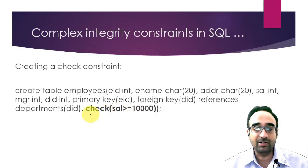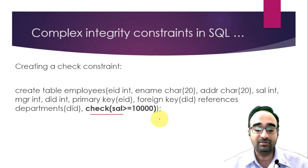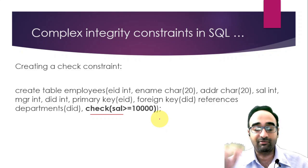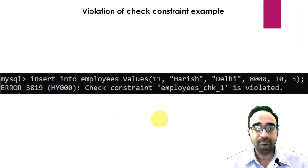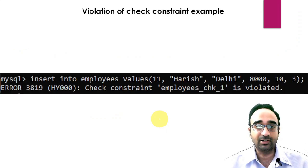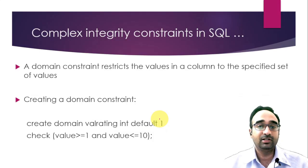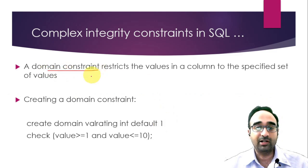Whatever conditions you want to check, you can define them in the table definition. You can also add a check constraint after creating the table by using the ALTER command. That covers the check constraint.